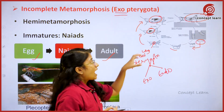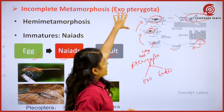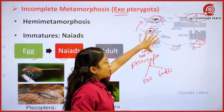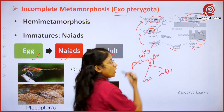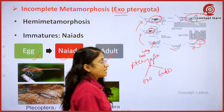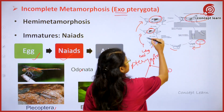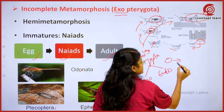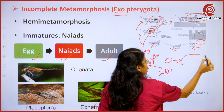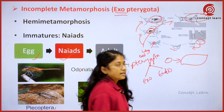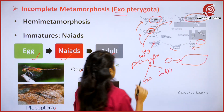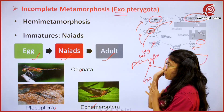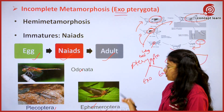We are able to see these wing buds externally, outside itself. So these insects come under the order Exopterygota. The only difference is that here a small wing bud is present, and as it increases in size the wing bud size is also increased, and it forms a fully developed wing. Since the wing bud is seen outside, these are known as Exopterygota.